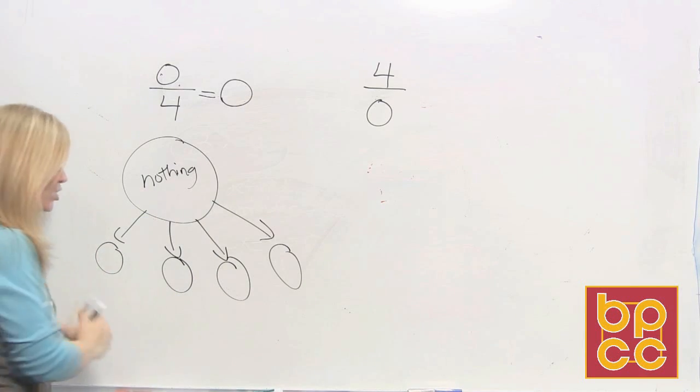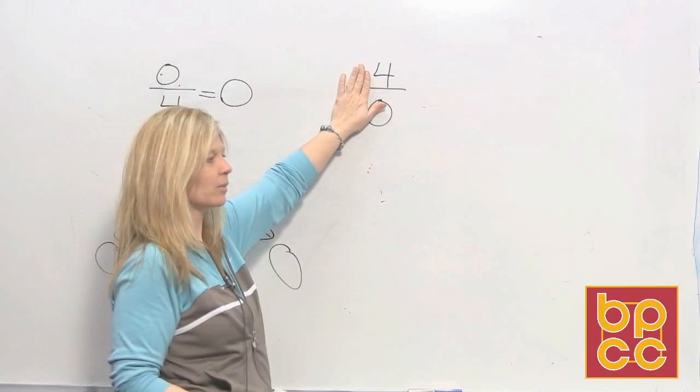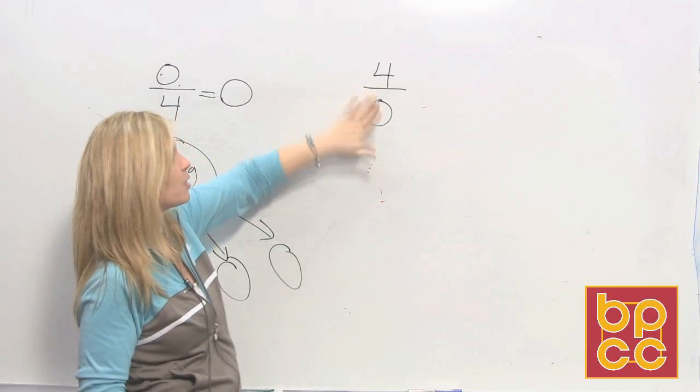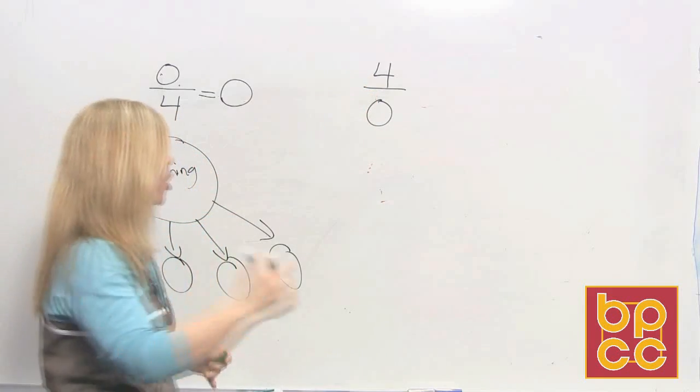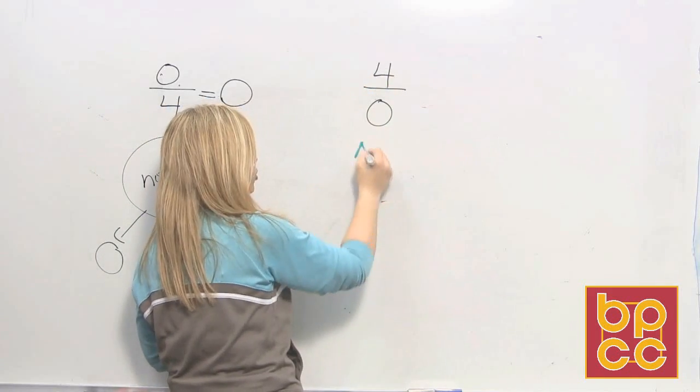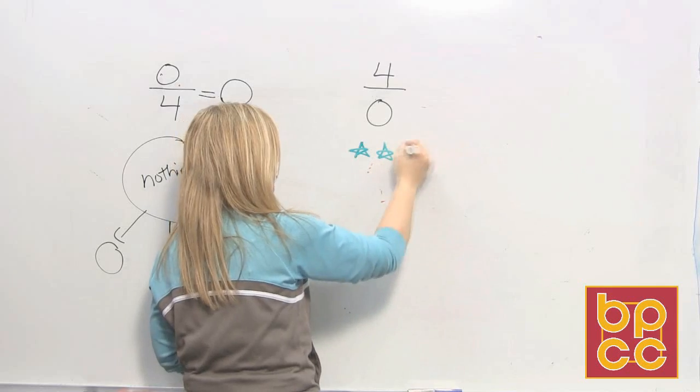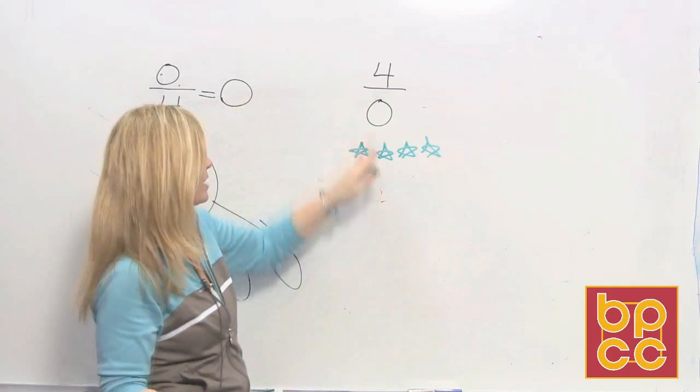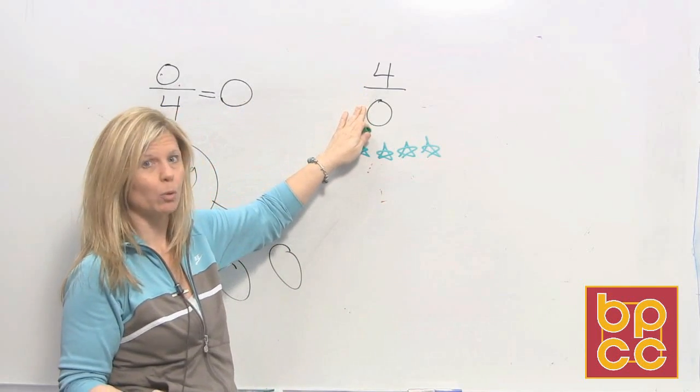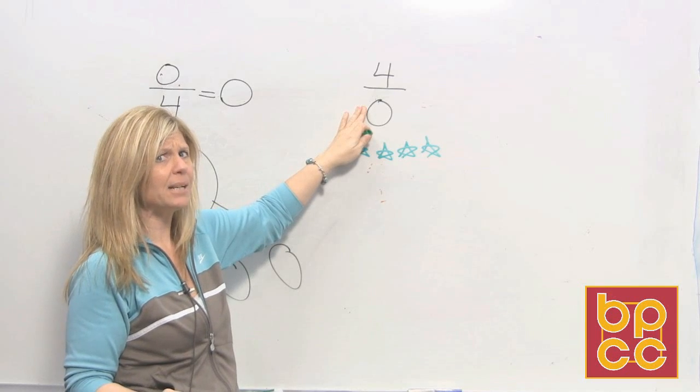Now, that is totally different than this expression. This is 4 divided by 0. This says I am starting with 4. So let's draw 4 stars. I am asking you to take those stars and divide them into 0 groups. Now can that be done?